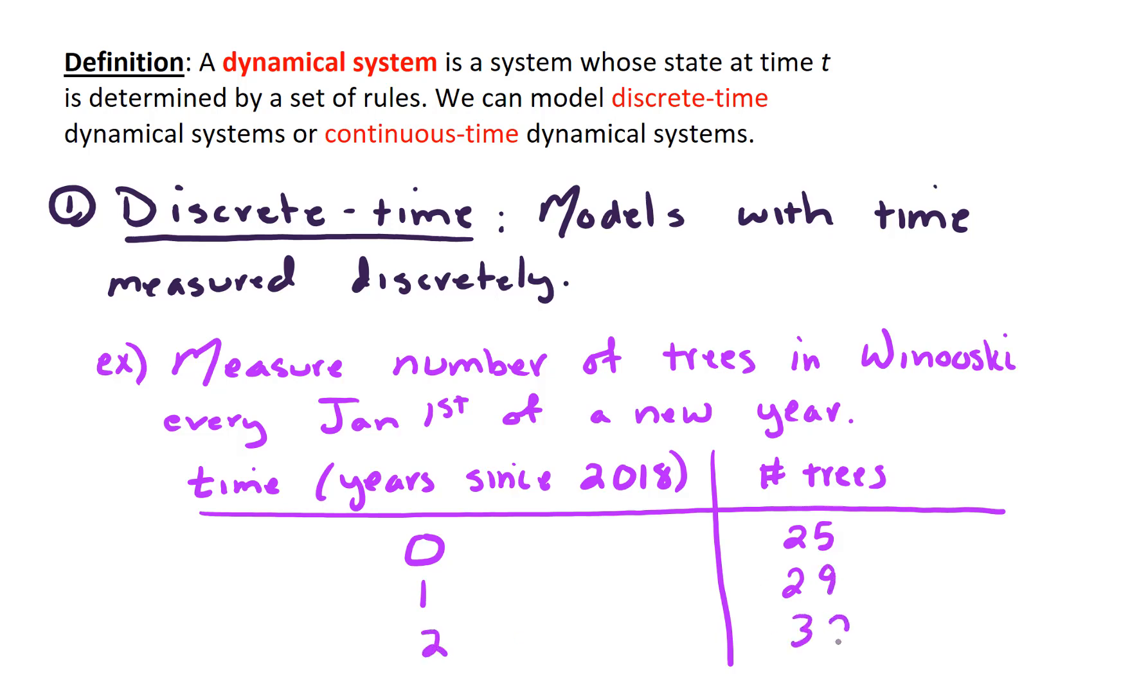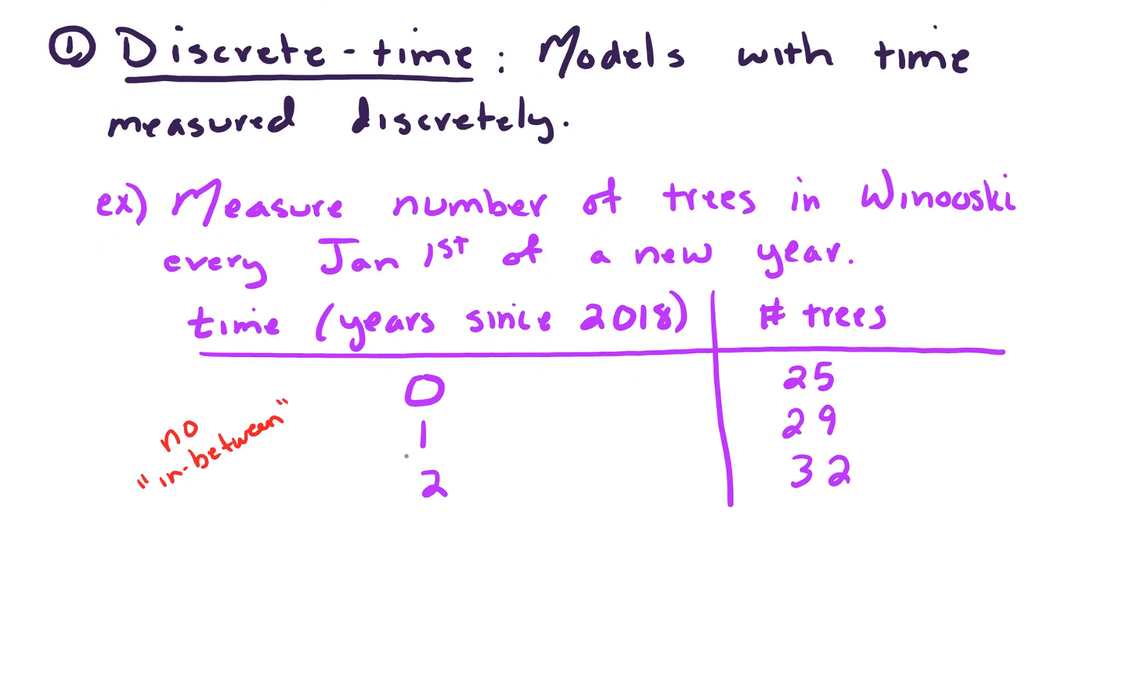But time is measured discretely. There's no in-between value between the markers where I've done my measurement. If you look at these data points 0, 1, 2, and so forth, these are like discrete points. Your data points are at these dots: time equals 0, time equals 1, time equals 2. There's no in-between. There's no going out and measuring trees in the month of August. We are only measuring trees at these discrete time steps.